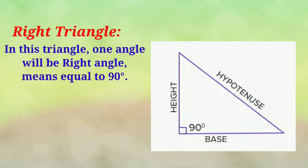Here we will get always one angle will be 90 degrees. And opposite to that 90 degrees the side we can say it as hypotenuse. And the bottom side we can call it as base. And the vertical side we can say it as height.